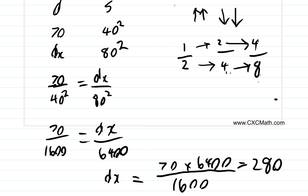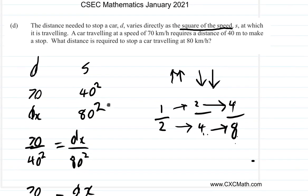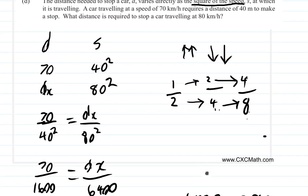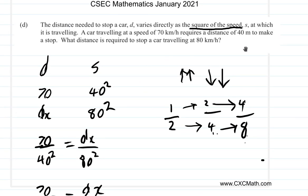Because remember, it says as the square. So, the distance will be 280. What distance required to stop at 80 kilometers per hour? It's going to be 280 meters. So, the answer here is 280 meters.